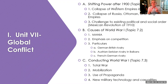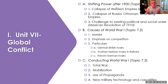Then we go into causes of World War I. I like to use the acronym MANIA. Militarism, which is a big emphasis on spending money to build up one's army and navy. A is for alliances — the two we really want to know are the Triple Alliance, which has Germany, Italy, and Austria, against the Triple Entente, which has Britain, France, and Russia.